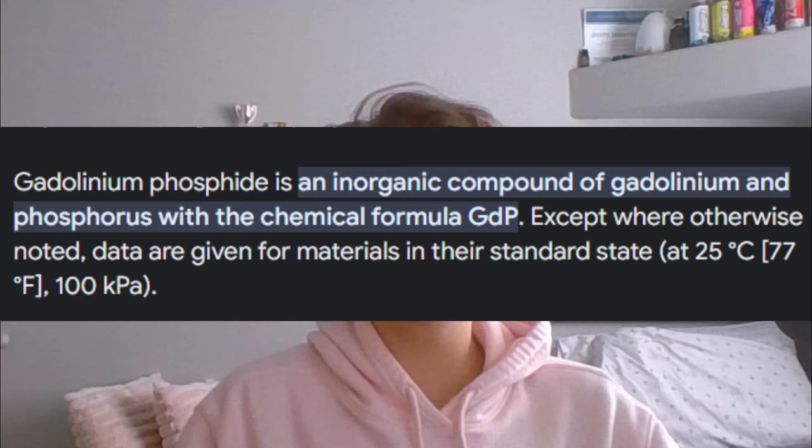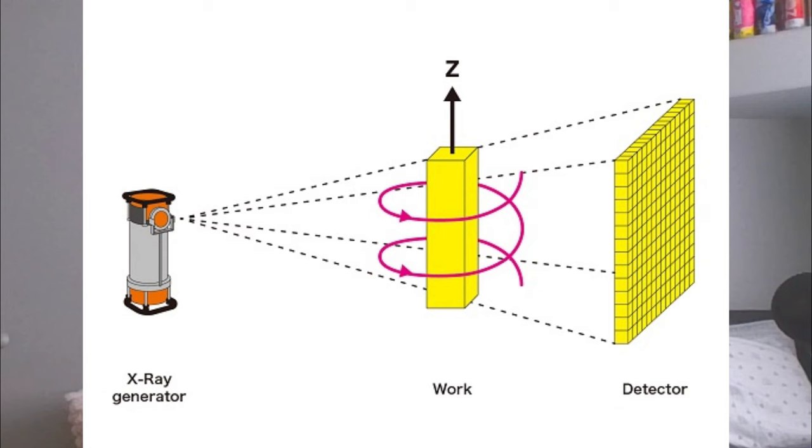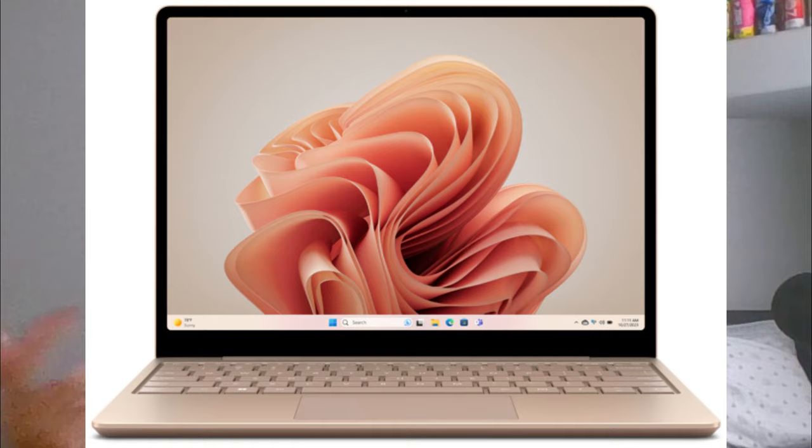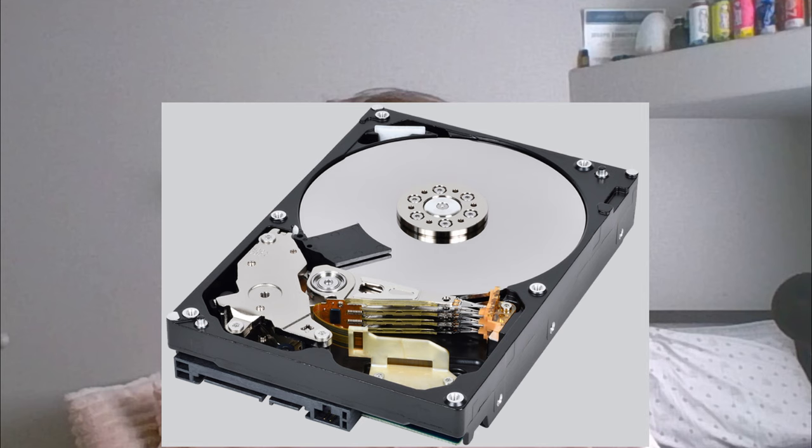Some of Gadolinium's uses are as hosts for phosphors, for fluorescent lamps, X-ray intensifying screens, scintillators for X-ray tomography, and as a magnetic resonance imaging — or MRI — contrast agent. Also for everyday life: magnets, electronic components like your phone or laptop, and data storage disks, for example, are made up of Gadolinium.